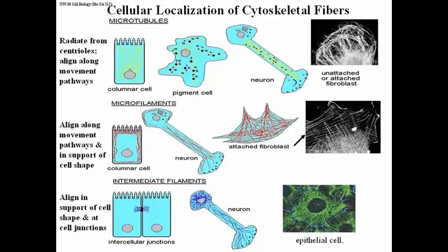And that's indeed what you see if you use fluorescent antibodies to intermediate filaments to localize them in the cell.